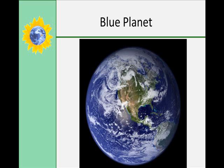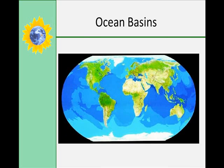The Earth is called the Blue Planet because nearly 72% of the surface is covered by water. The Earth's ocean can be divided into four main basins: the Pacific, Atlantic, Arctic, and Indian basins. And you can see them starred here.